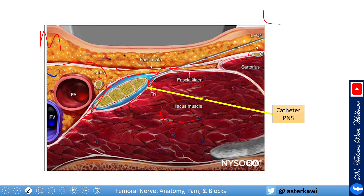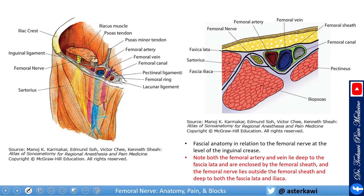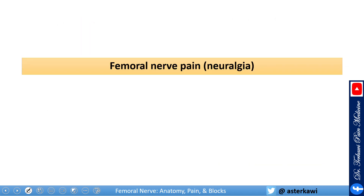My suggestion is to go below the nerve, and also pay attention to the fascicles especially when doing peripheral nerve stimulation. Note that both the femoral artery and vein lie deep to the fascia lata and are enclosed by the femoral sheath, while the femoral nerve remains outside. More medially you have the pectineus, which we'll discuss in the obturator nerve video.